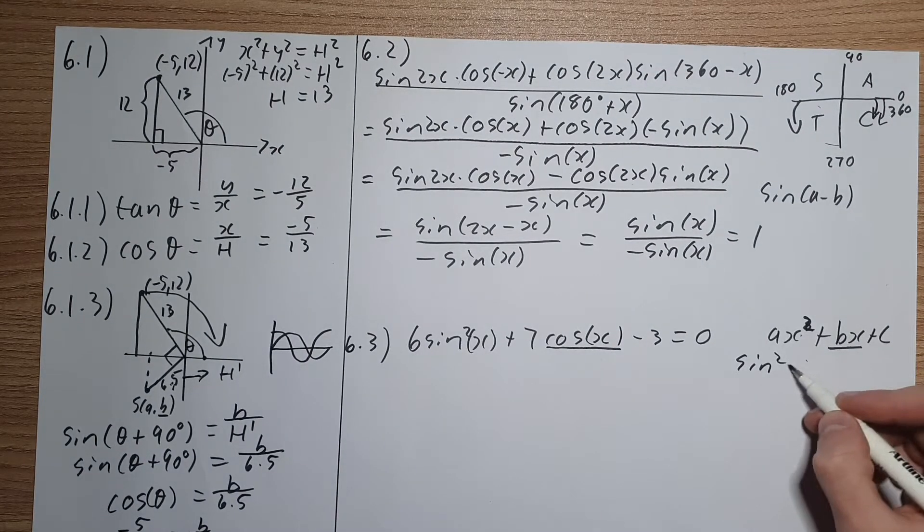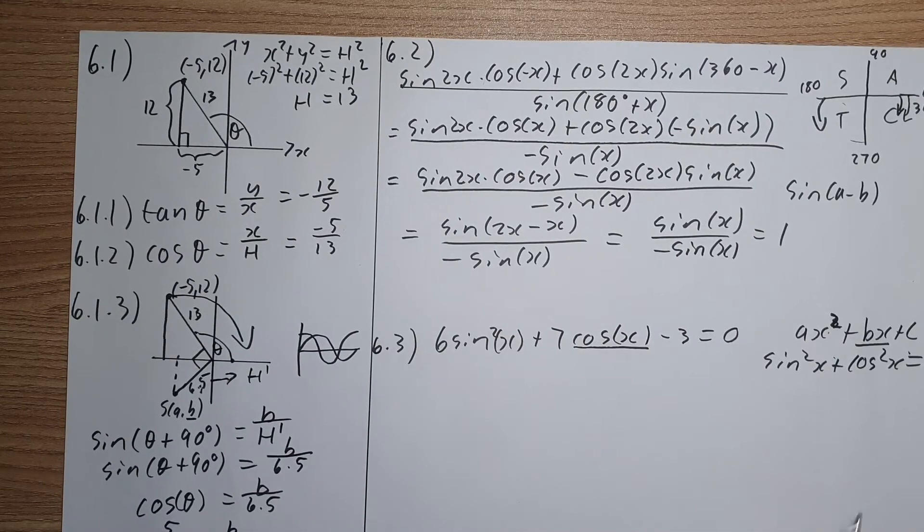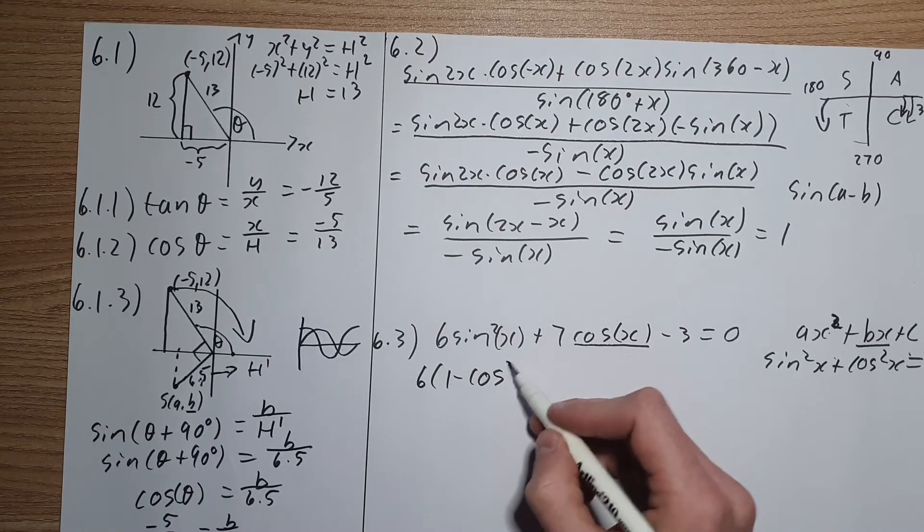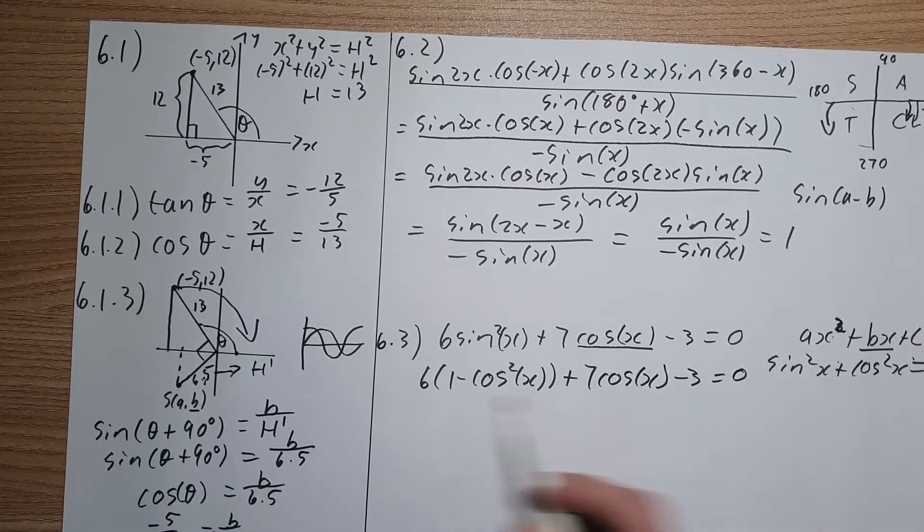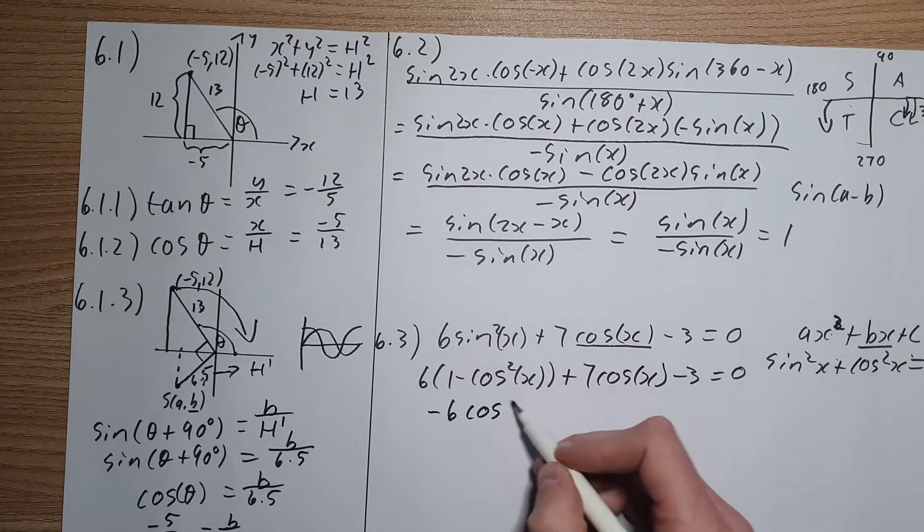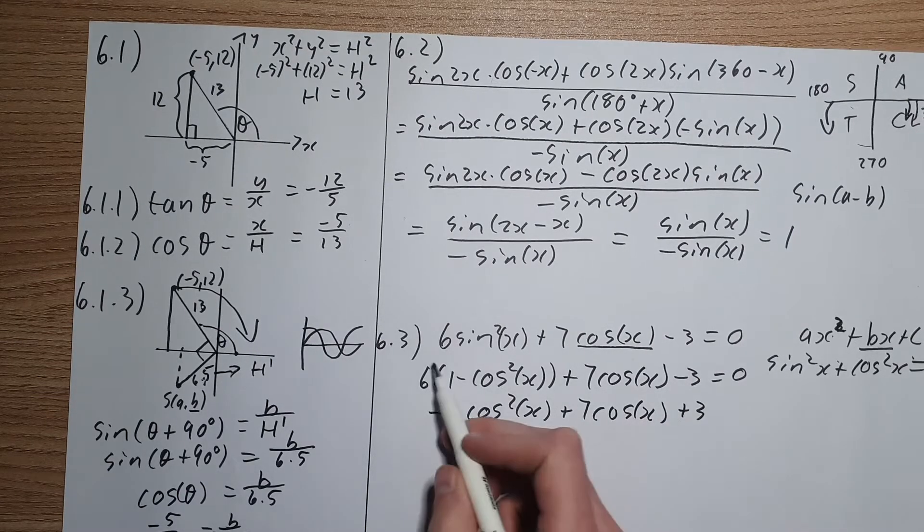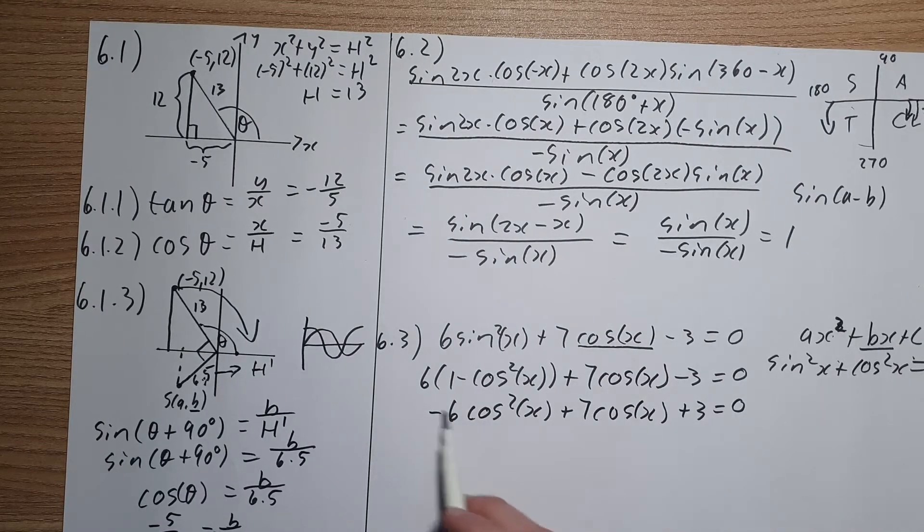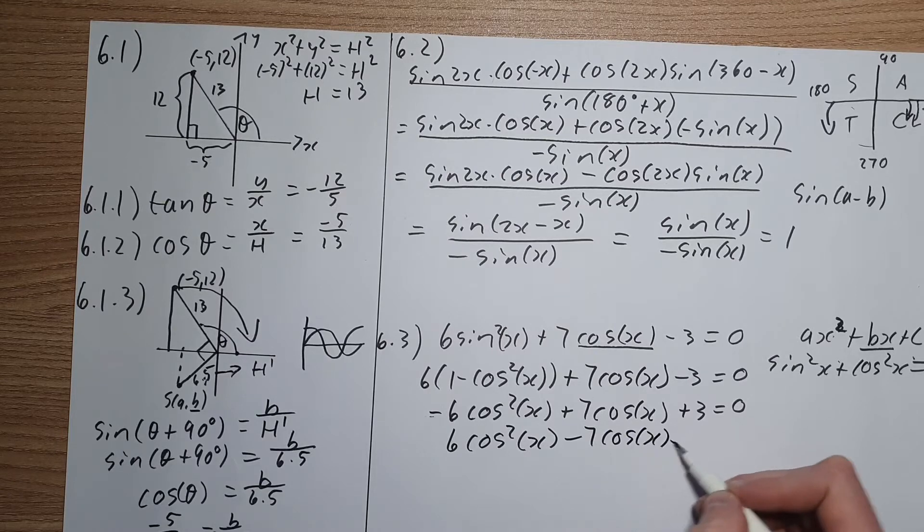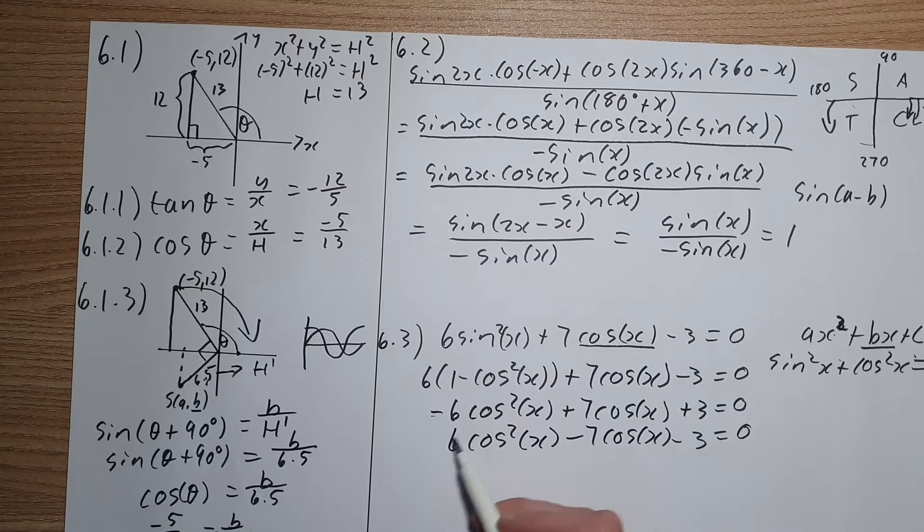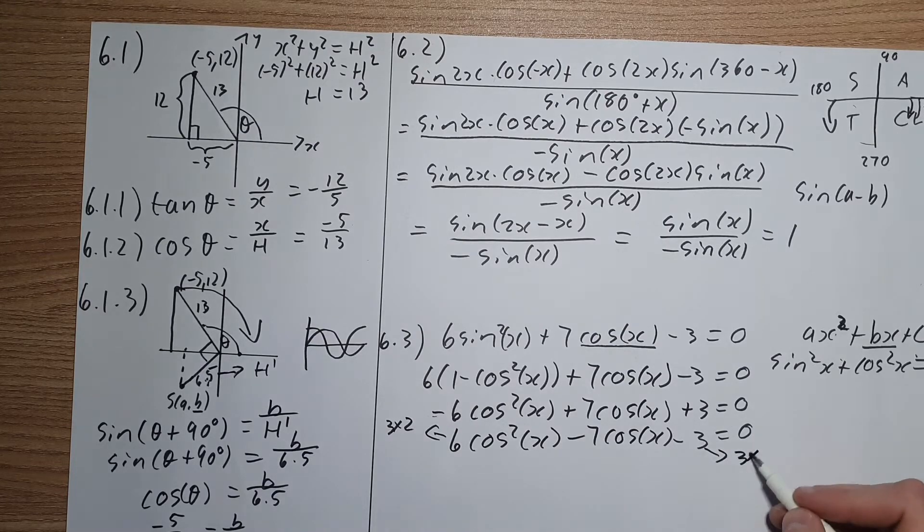Sin squared x plus cos squared x equals to 1. So I'm going to replace this with 1 minus cos squared x plus 7 cos x minus 3 equals to 0. If we sort out this over here, we're going to get negative 6 cos squared x plus 7 cos x plus 3. That plus 3 comes from this minus 3 and that plus 6 over there. Now we don't like the negative in front here, so we're just going to divide out by negative.